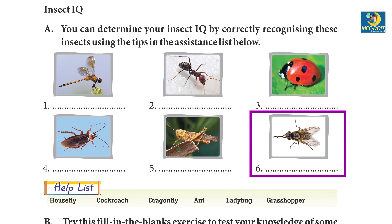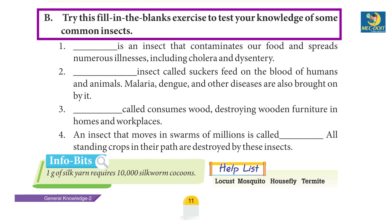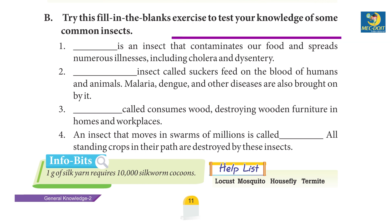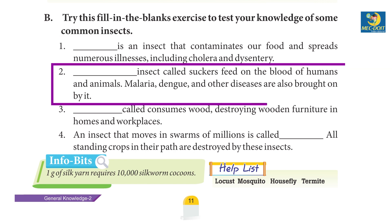Part B — Try this fill-in-the-blanks exercise to test your knowledge of common insects. Number one: locust is an insect that contaminates our food and spreads numerous diseases including cholera and dysentery. Number two: mosquito — insects called suckers — feed on the blood of humans and animals; malaria, dengue, and other diseases are also brought on by it.